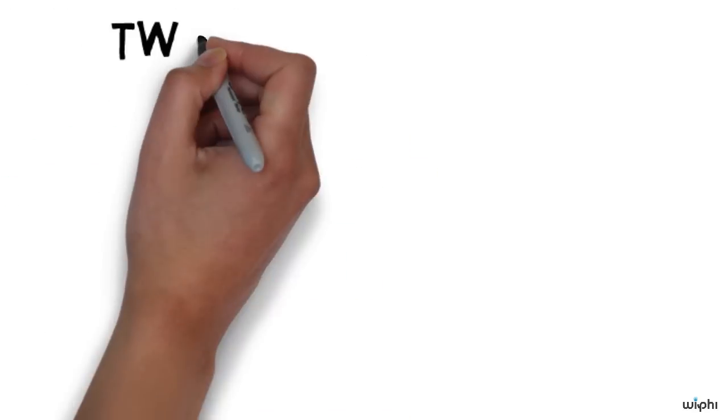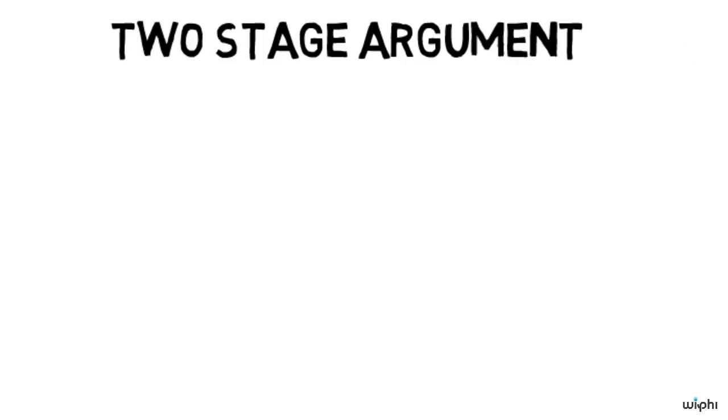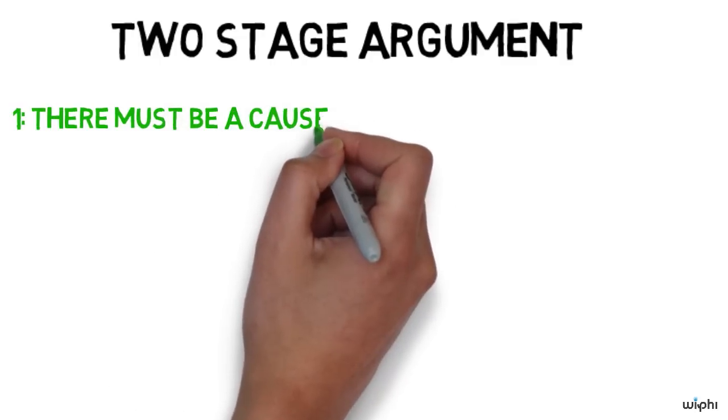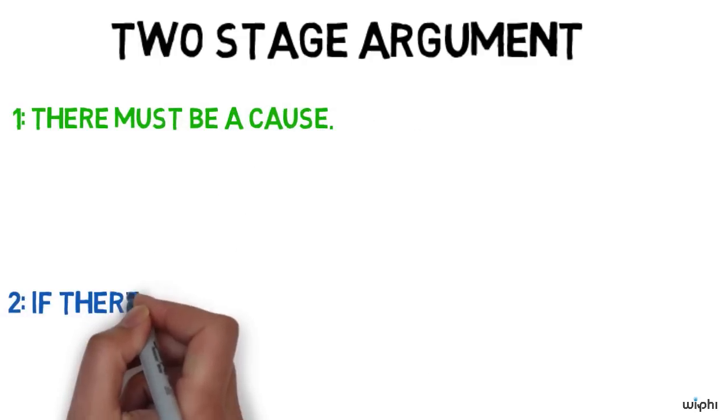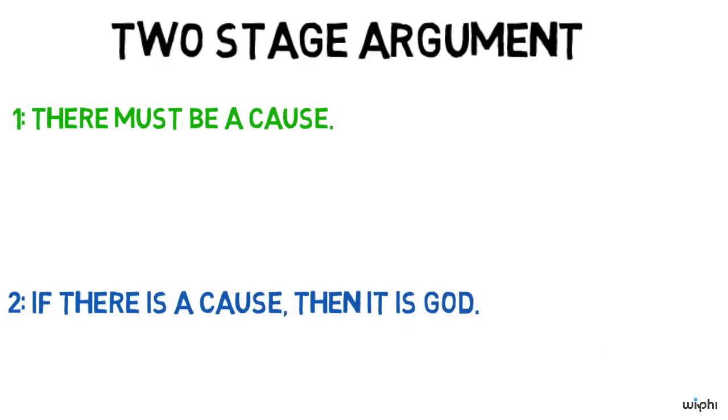Notice that this is really a two-stage argument. The first stage is to establish that there must be a cause. The second stage is to explain what this cause is like. In these talks, I will be focusing on the first stage, but at the end I'll have a little bit to say about what we could know about the cause of the universe from these arguments.